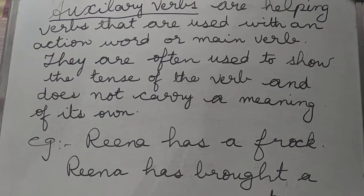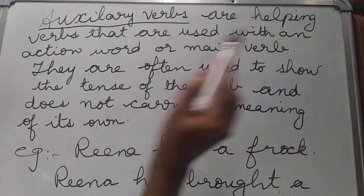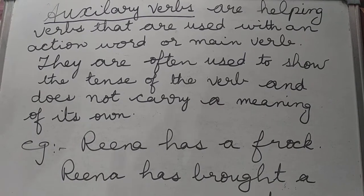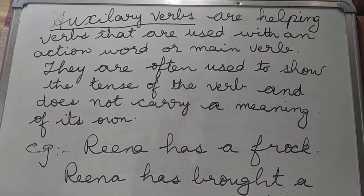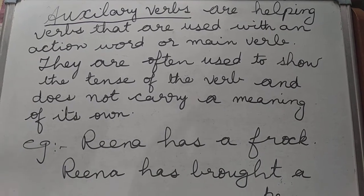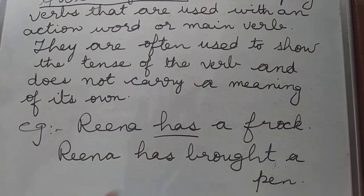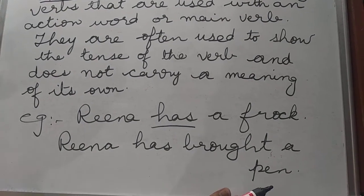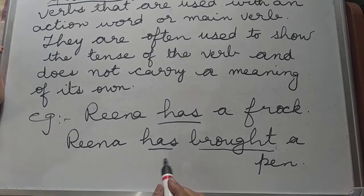Now let us see what are auxiliary verbs. Auxiliary verbs are helping verbs that are used with an action word or main verb. Sometimes we use these words as auxiliary verbs, and sometimes as main verbs. For example: Rina has a frock — here 'has' is the main verb, used as a main verb. Next example: Rina has brought a pen — here the main verb is 'brought' and the auxiliary verb is 'has'.